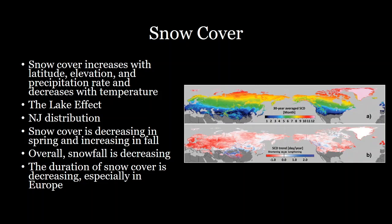The duration of snow cover is also decreasing — fewer months out of the year where snowfall is actually occurring. This is especially true in Europe and Western Asia, where there is significant shortening of the snow season. While some areas like the Himalayas that are getting a little more precipitation might be increasing, the general trend is much less snowfall occurring.